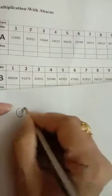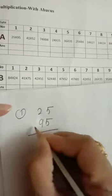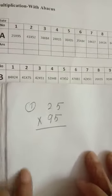We have to write down question number 1 is 25×95. We have to write down this formula. And now we have to start.